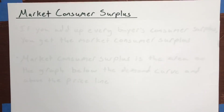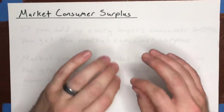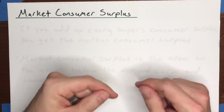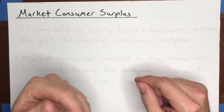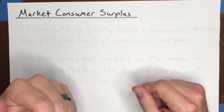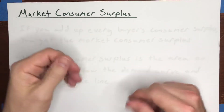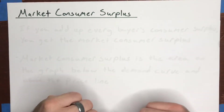In the last video we talked about consumer surplus at an individual level. Recall that consumer surplus is just equal to their maximum willingness to pay minus the price that they actually pay.